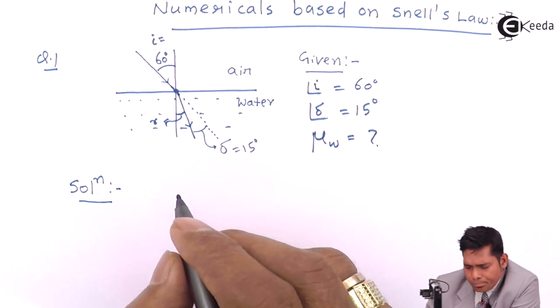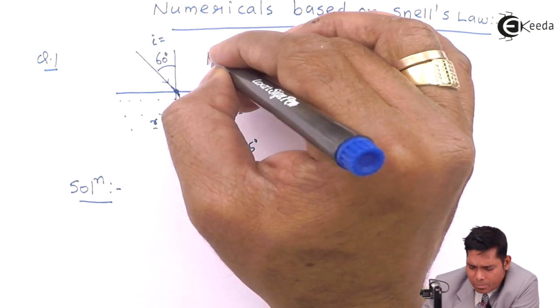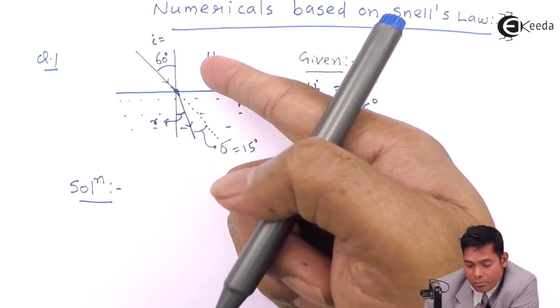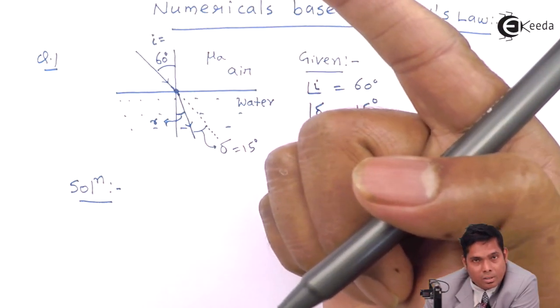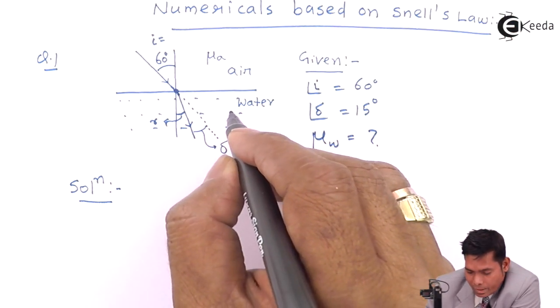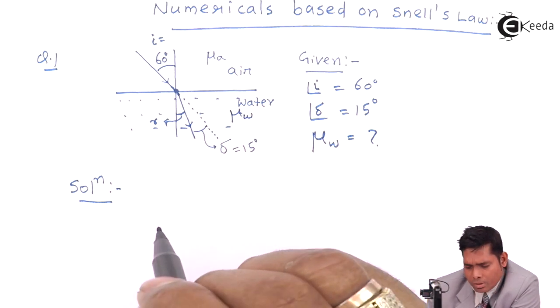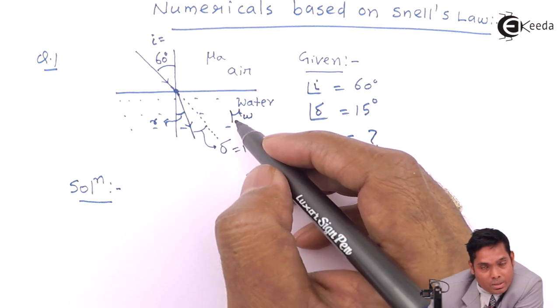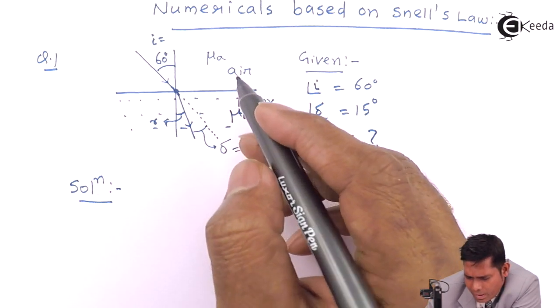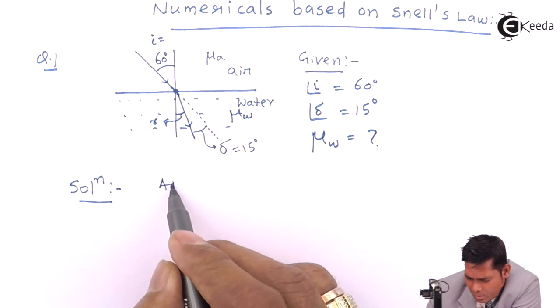We use Snell's Law to solve this question. What is Snell's Law? It says that if the refractive index of this medium is mu A with respect to absolute refractive index of air with respect to itself is 1. The refractive index of water is mu W with respect to, obviously, air. We know that Snell's Law is mu A, applying Snell's Law.